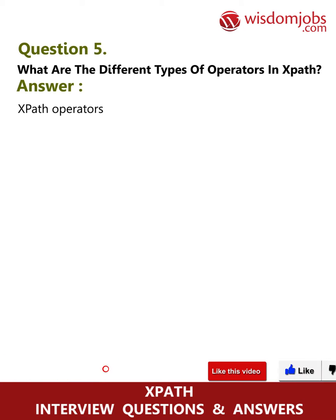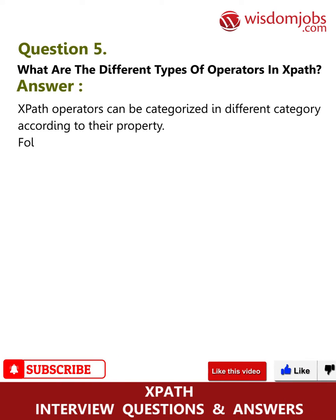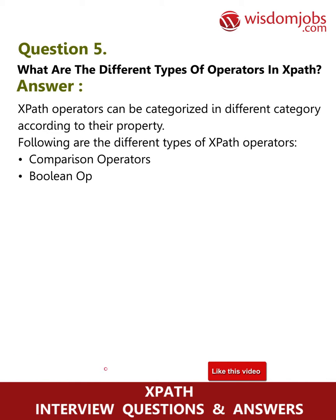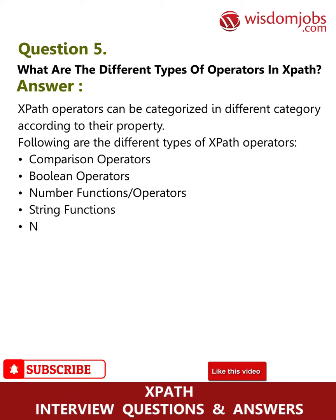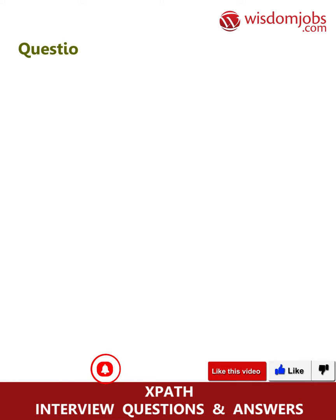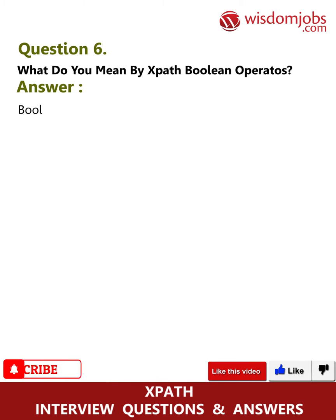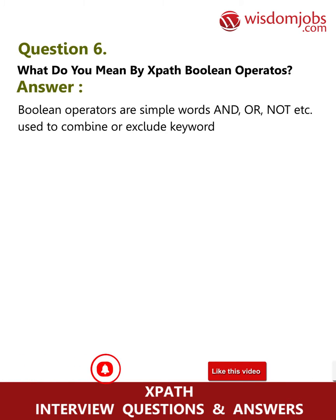Question 5: What are the different types of operators in XPath? Answer: XPath operators can be categorized into different categories according to their properties. The different types of XPath operators are: comparison operators, boolean operators, number functions, slash operators, string functions, and node functions.